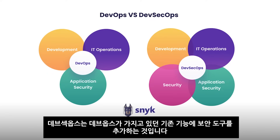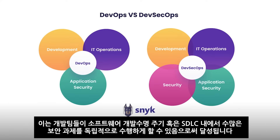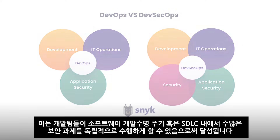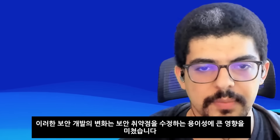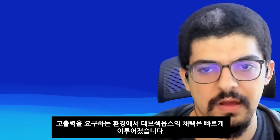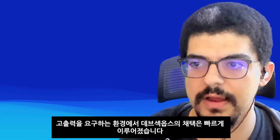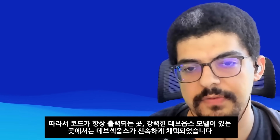DevSecOps is a movement that harnesses DevOps's power, bringing security practices into the fold. DevSecOps activities designed to identify and solve security issues are injected early into the lifecycle of application development rather than after a product is released. This is accomplished by enabling development teams to perform many security tasks independently within the SDLC. This shift has profoundly affected the ease of remediating security vulnerabilities, and finding vulnerabilities earlier in the SDLC is better than the alternative. The adoption of DevSecOps has been swift in high-output environments where code is being released continuously and there is a robust DevOps model.